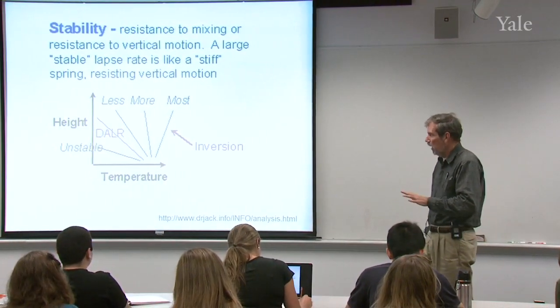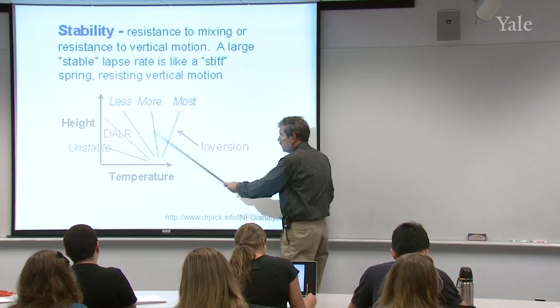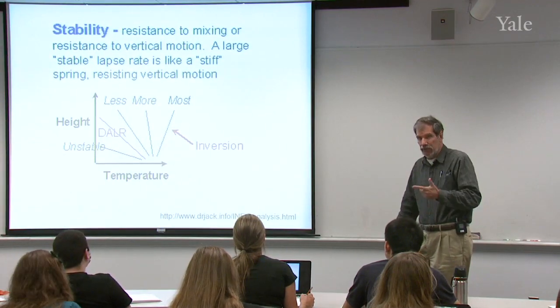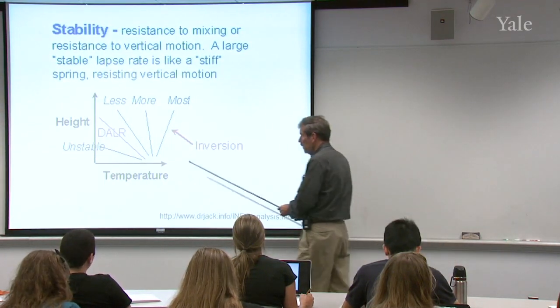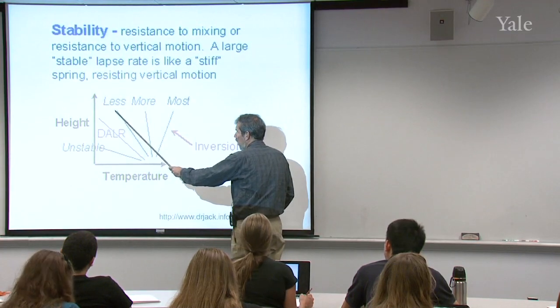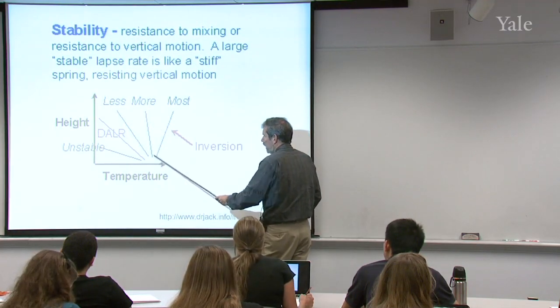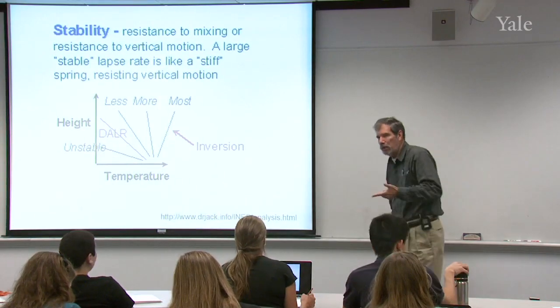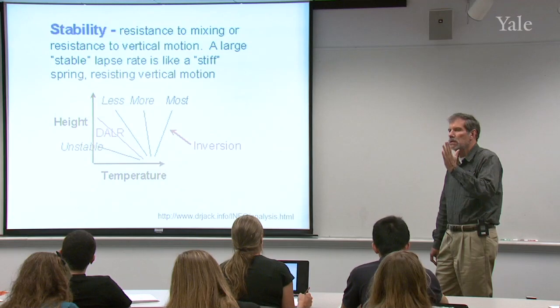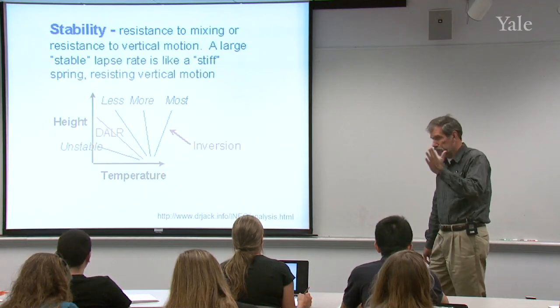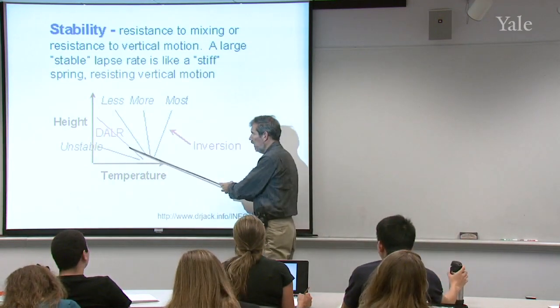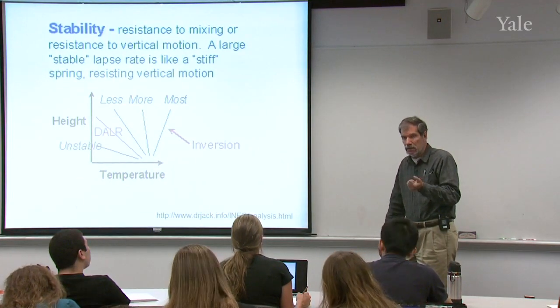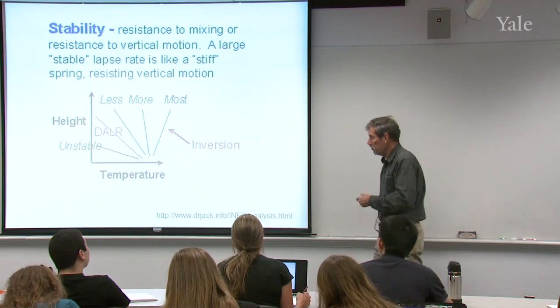All these other curves are possible actual atmospheric lapse rates. On Tuesday, maybe the temperature decreases aloft like that. On Wednesday, maybe it's like that. The next day, maybe it's like that. In other words, from day to day, from hour to hour, you're going to have different actual lapse rates. In each case, we're going to want to compare that with this reference curve, the dry adiabatic lapse rate.